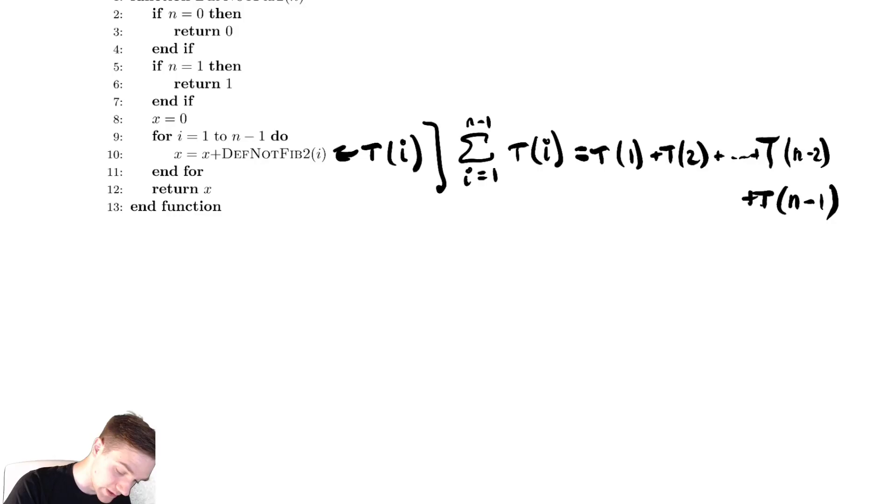So my recurrence relation here is t of n is equal to constant for everything that's not recursive calls plus t of one plus t of two plus all the way up to t of n minus two plus t of n minus one.